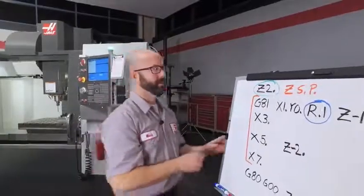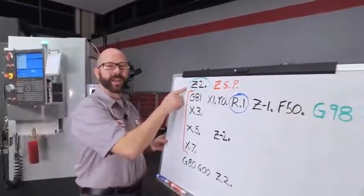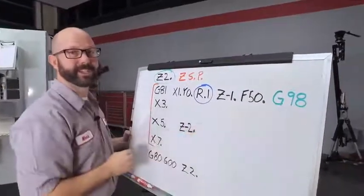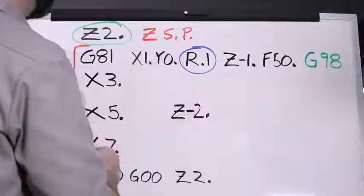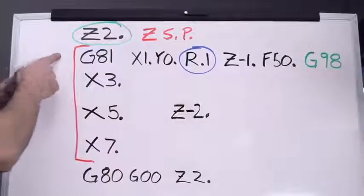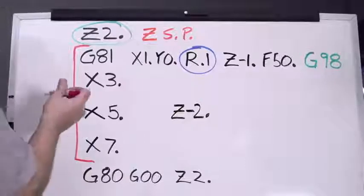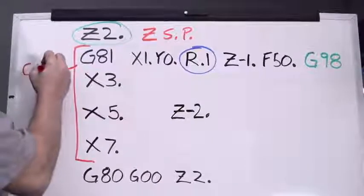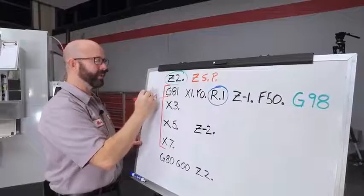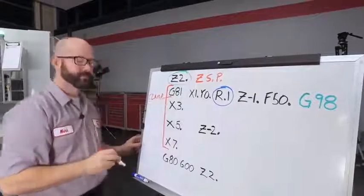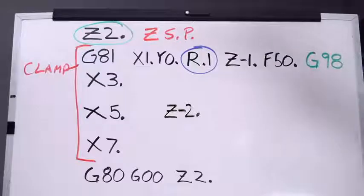Now, we've made some changes to our whiteboard. We changed our Z point five to Z two inch, and we also wrote in that implicit G98. The first line here is our first hole. It ran pretty good. At the end of that hole, it retracted two inches above the part, which cleared that clamp that was resting in between holes one and two. So, now we're ready for hole two.